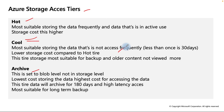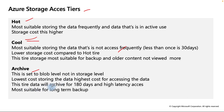Cool tier is most suitable for data that is not accessed frequently — roughly once in 30 days — and has lower cost compared to Hot. It's mostly used for backup and old content not viewed often. Archive is set at the blob level, not the storage level. It has very low storage cost but the highest data access cost, and is best for long-term backup. Data archived at this tier has a minimum 180-day retention and high latency when accessing.